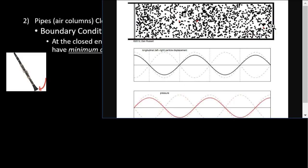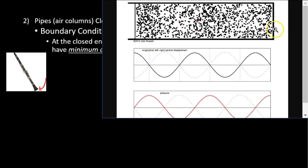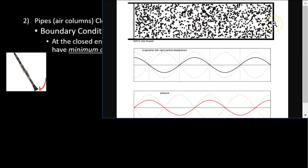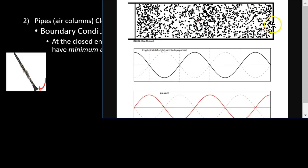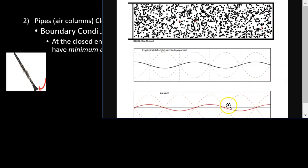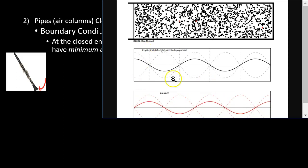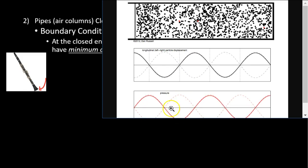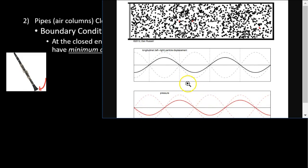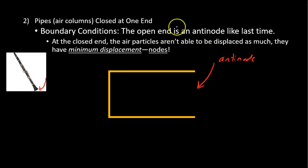When you have an open end, the particles are moving a lot but they're always about the same compactness — they're all moving together backwards and forwards. At the closed end, they move very little but can sometimes be spread out a lot or compacted. You might see a pressure diagram to represent these longitudinal waves, but it's the same wavelength — the diagrams are kind of flipped. Anyway, let's get back to our slides.